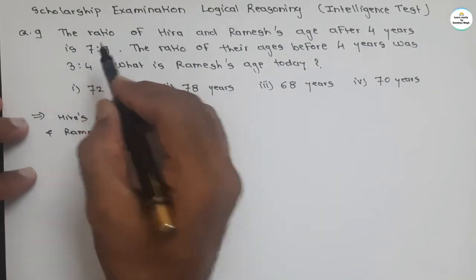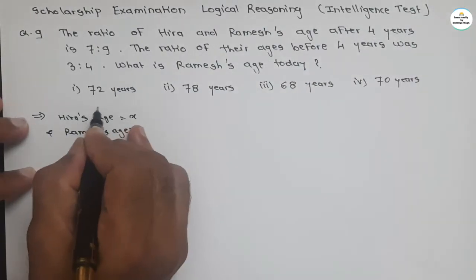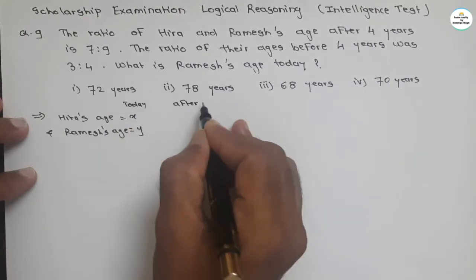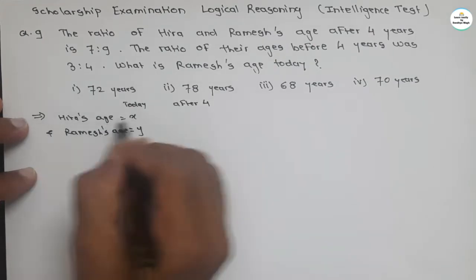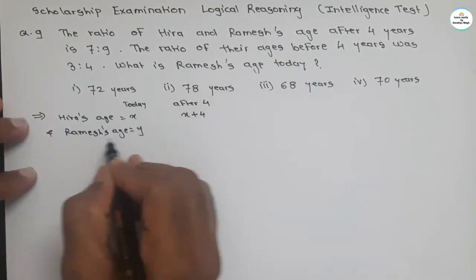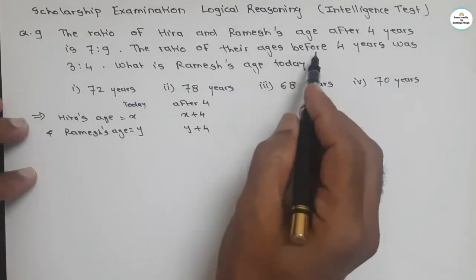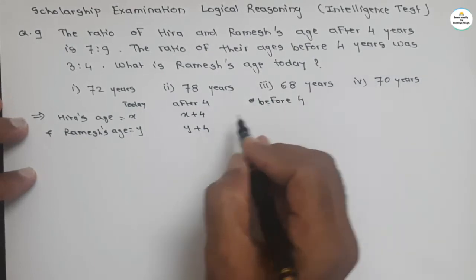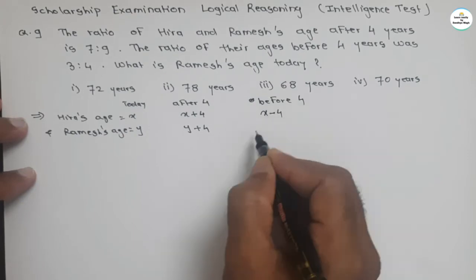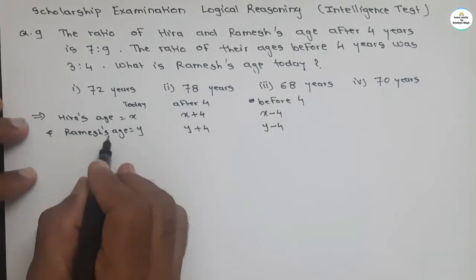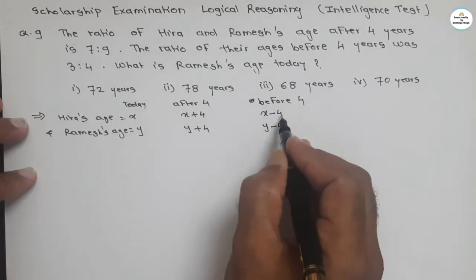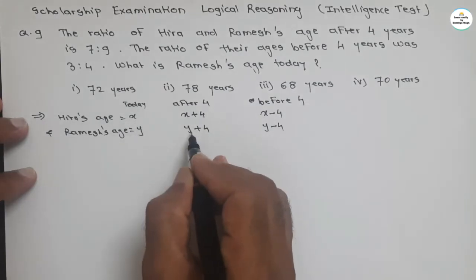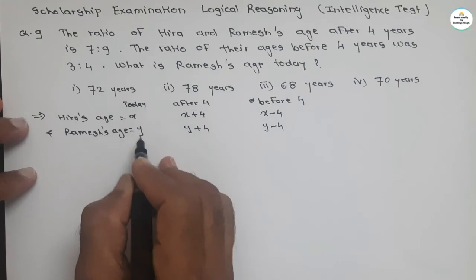The ratio is given for after 4 years — this represents the future condition. After 4 years, Hera's age will be X plus 4 and Ramesh's age will be Y plus 4. Before 4 years, Hera's age will be X minus 4 and Ramesh's age will be Y minus 4, because presently we have X and Y as their ages.